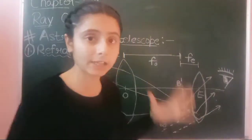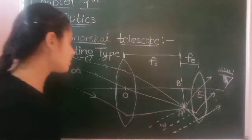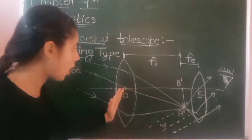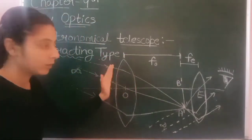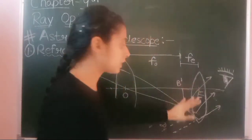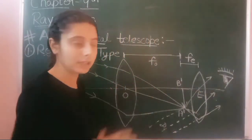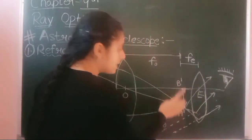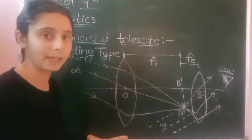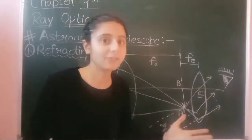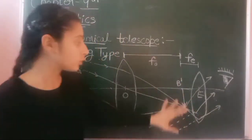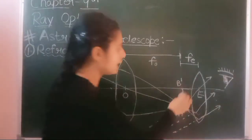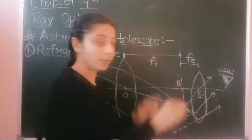The rays from the infinity object pass through the objective. The image of the object placed at infinity is real and inverted.